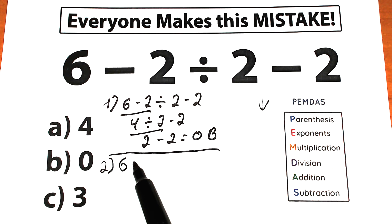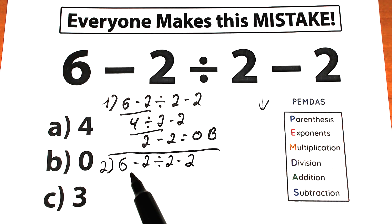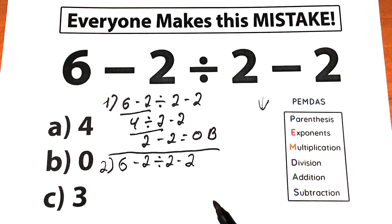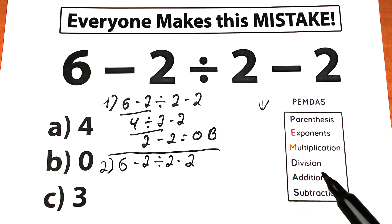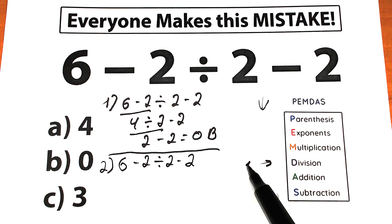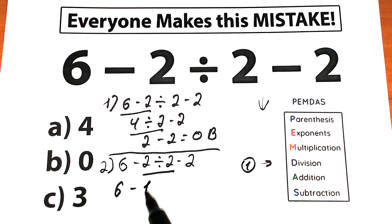Here's our challenge: 6 minus 2 dividing by 2 minus 2. We have division in the middle and subtraction on the sides. What should we do first — divide or subtract? As PEMDAS works from top to bottom, division has higher priority than subtraction. So our first step is division: 2 divided by 2. This gives us 6 minus 1 minus 2.